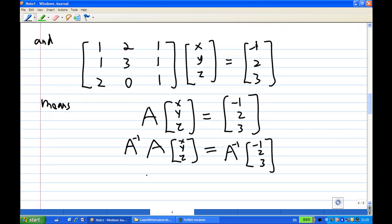Now, A inverse times A is the identity matrix. The identity in this case is this 3x3 matrix: [1,0,0; 0,1,0; 0,0,1].